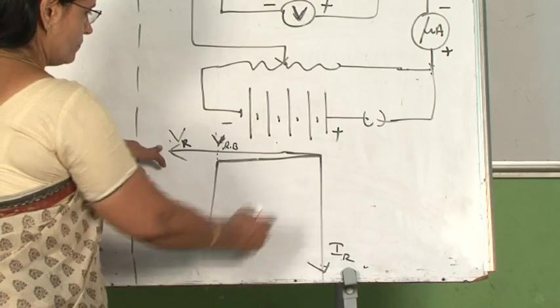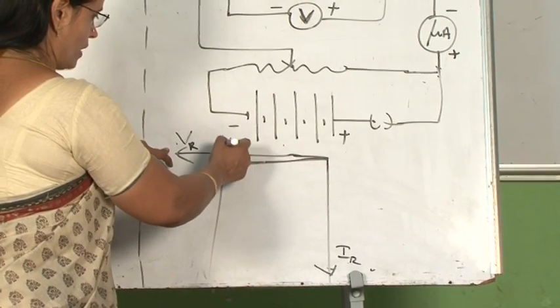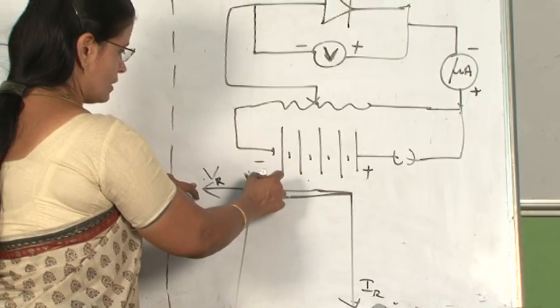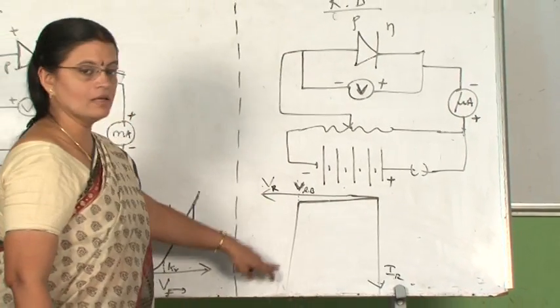So if you plot the graph between the reverse voltage and reverse current, you will get a graph like this. Initially, the current will be very small. But after a particular voltage called reverse breakdown voltage, the current increases very rapidly.